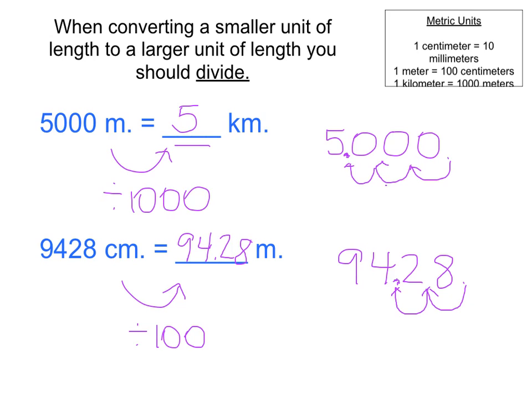Once again, if that's a little bit confusing, you can always use estimation. And I can round my number, 9428, to about 9,000. And I can keep my 100. And when I divide 9,000 divided by 100, I get 90 as an estimate. So my answer is very close to my estimate, and I know that I'm accurate.